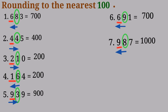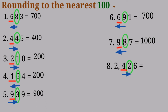Number 8: 2,426. I'm looking at the tens place, which is 2, and the hundreds place, which is 4. Since 2 is a rounding down number, it has no power to push 4 up. So it will remain 400, and I'll write 2,400.